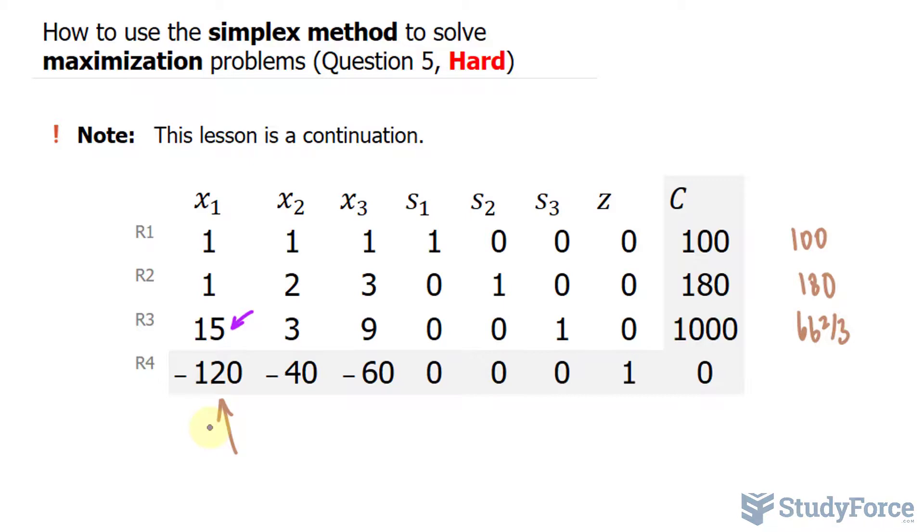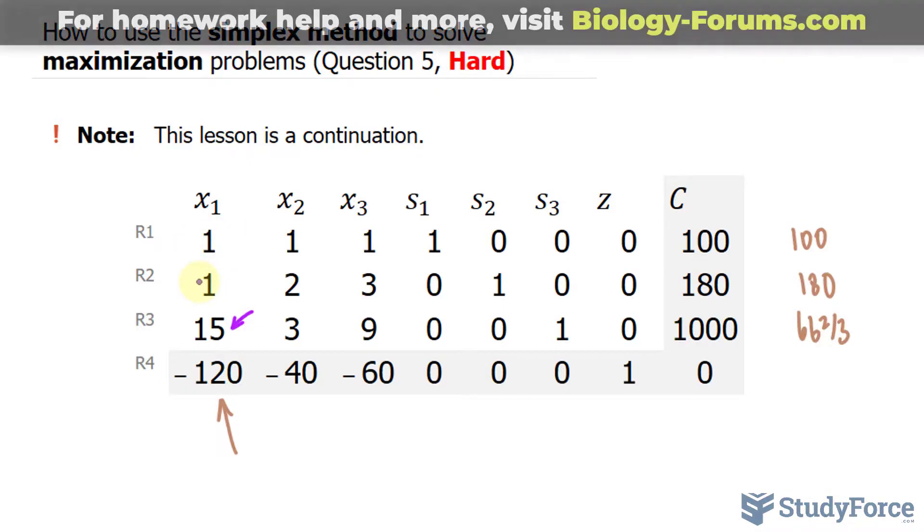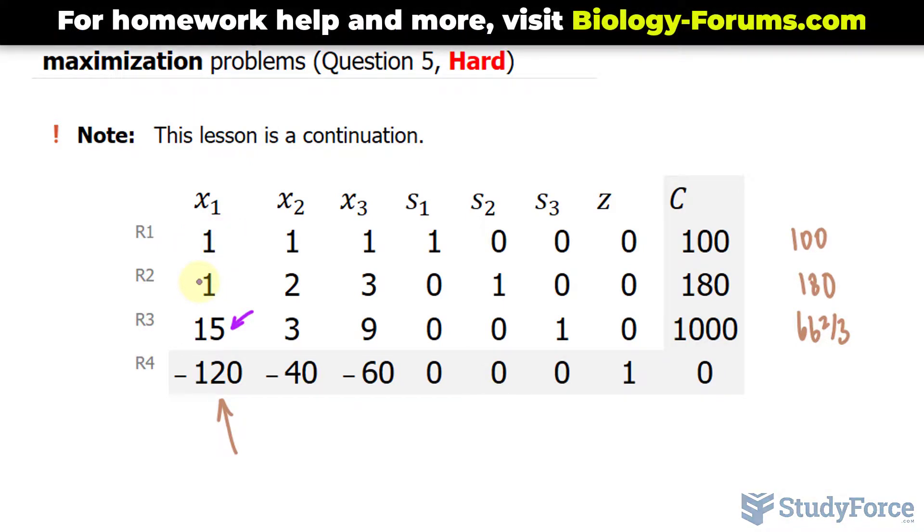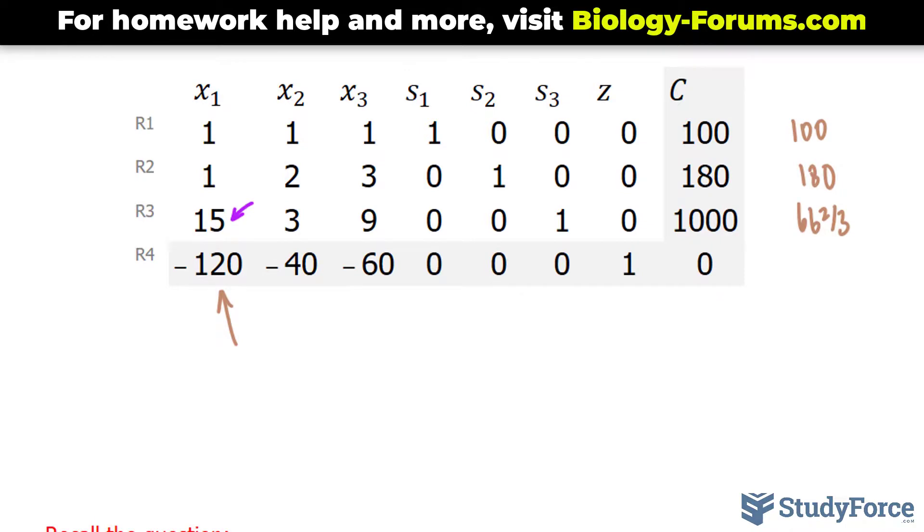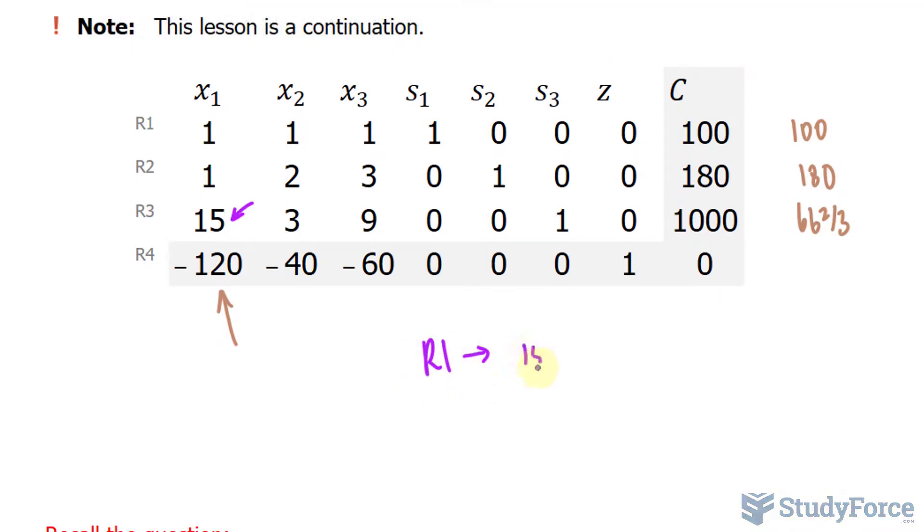You can do that by using matrix row operations. For example, if I want to make this 1 into a 0, I'll multiply all of row 1 by 15 and then subtract from row 3. So I'll document that for you. Row 1 becomes 15 times row 1 minus row 3. And just to give you a demonstration, 15 times 1 is 15, minus 15 is equal to 0.